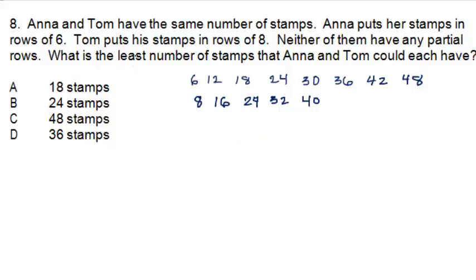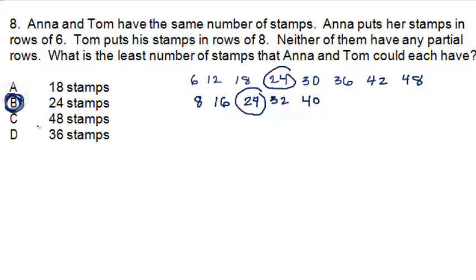What they want is the least number of stamps that Anna and Tom could each have. We already have a number that is common to both of them: 24. And that's the least amount. So this tells us that it's possible that Anna has 24 stamps and Tom also has 24 stamps, and they would be able to put them in rows of 6 and 8 without having any stamps left over. So B would be my choice.